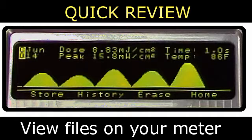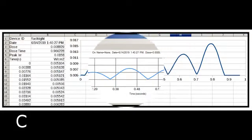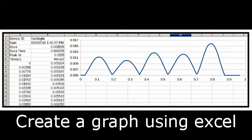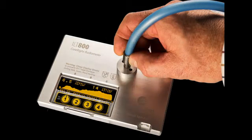If you need a calibrated traceable light meter that allows you to save, view, and compare your results for years to come, the ILT 800 CureRight radiometer series is the right tool for you.